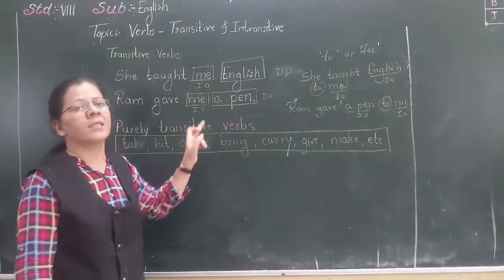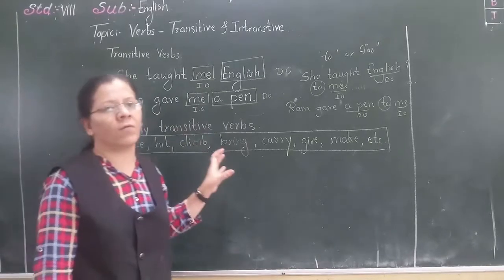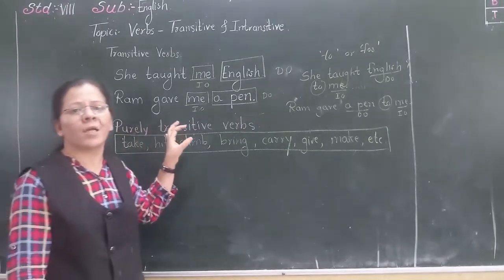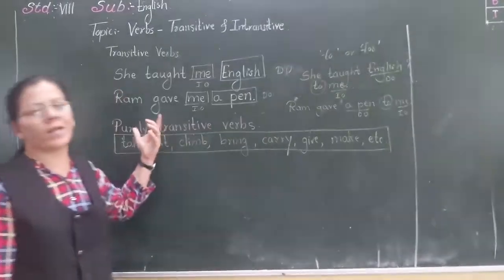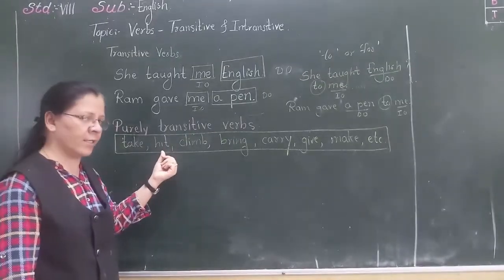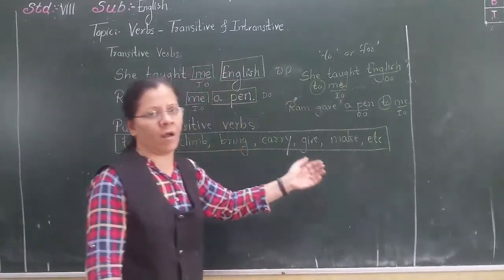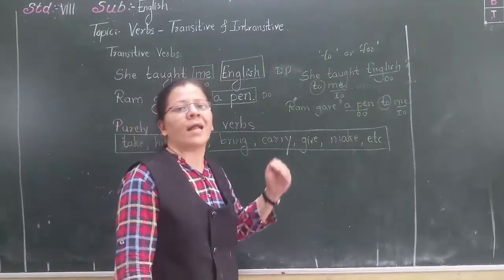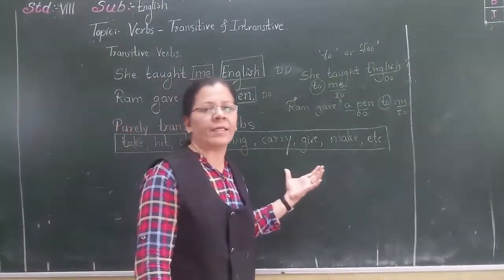Now there are certain words which are purely transitive verbs. Transitive means transfer — when the verb transfers action to an object, it is called a transitive verb. It requires an object to complete its sense. The words which are purely transitive verbs are: take, hit, climb, bring, carry, give, etc. Without an object, these verbs cannot complete the sense.